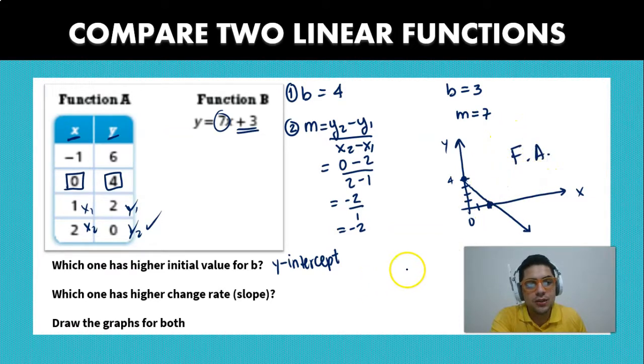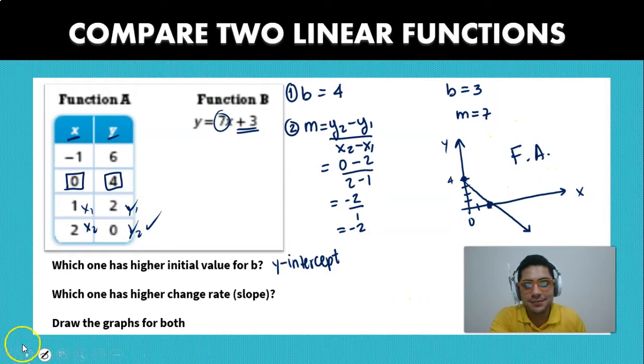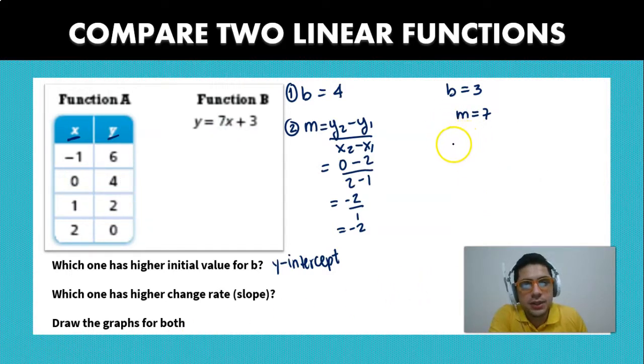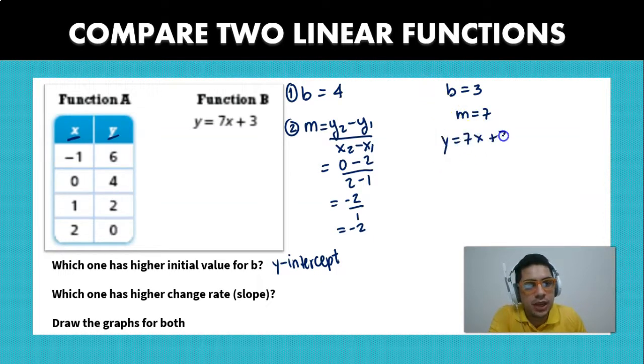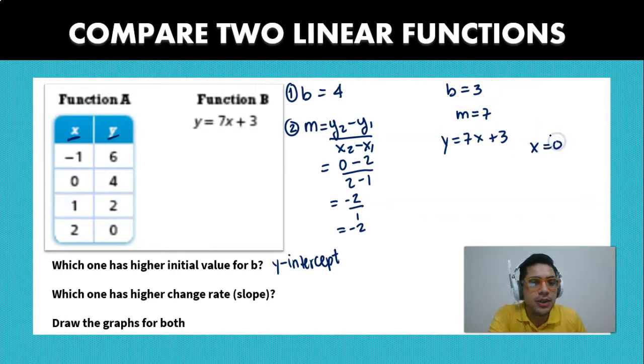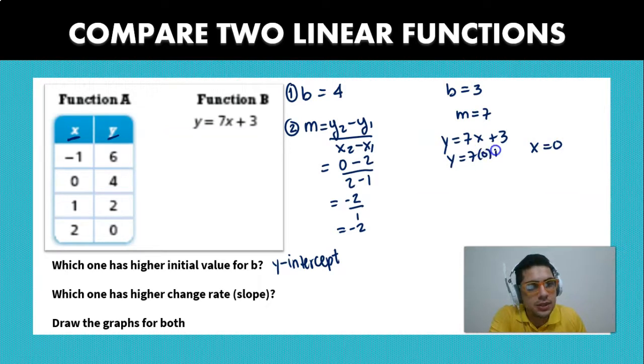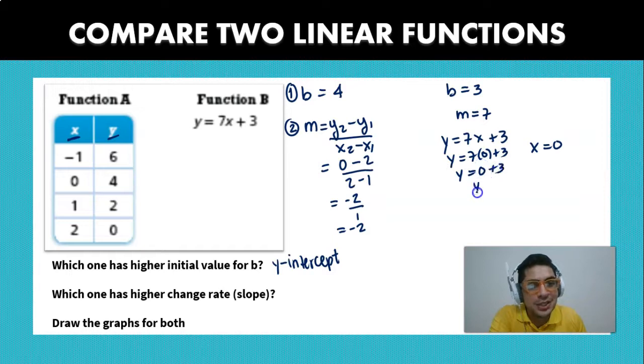Now let's try doing function B. So in the case for function B, we can just graph two points. So we have y equals 7x plus 3. Let's choose a point. So let's say for x equal to 0. For x equal to 0, we're going to get the point 7 times 0 plus 3, which is going to be 0 plus 3, which is 3.